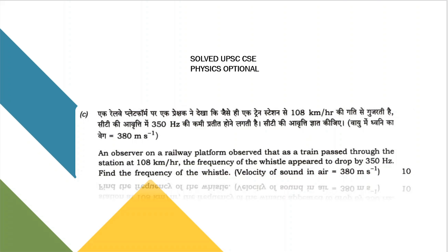Hello everyone. In today's video we will be solving one of the previous exam questions. The question says an observer on a railway platform observed that as a train passed through the station at 108 kilometers per hour, we are given the frequency drop and we have to find out the actual frequency of the whistle. The velocity of sound in air is given as 380 meters per second.